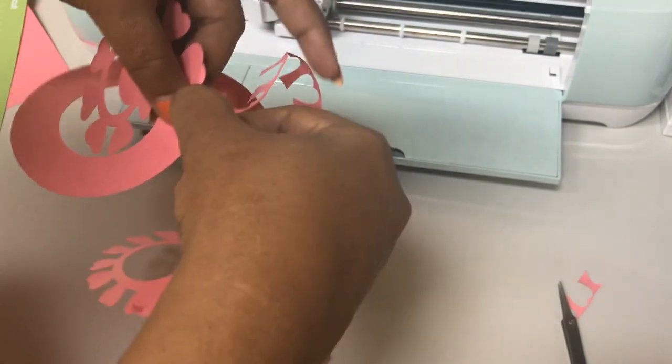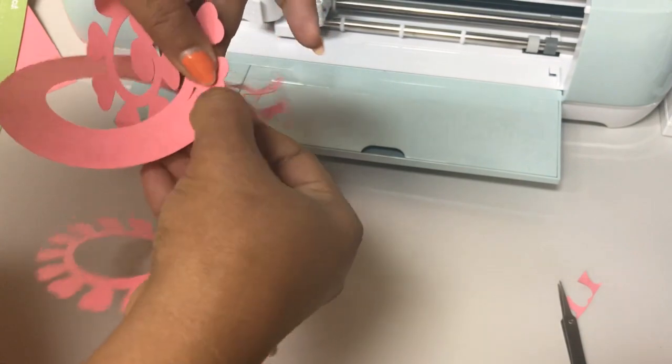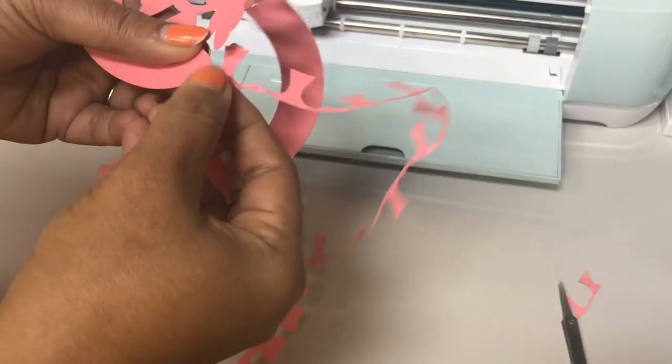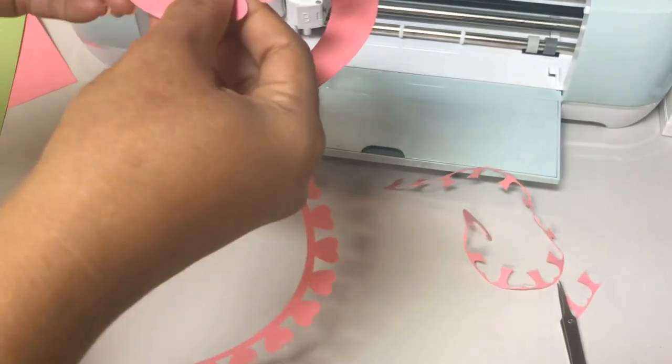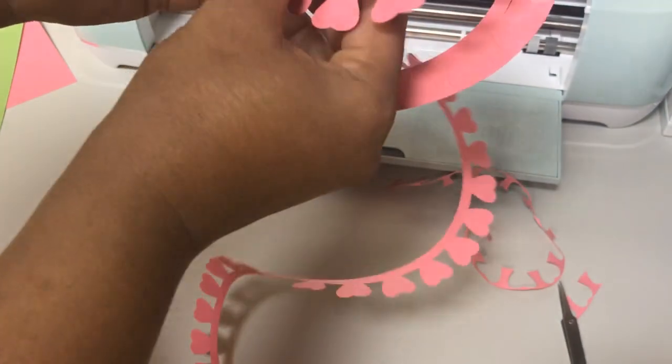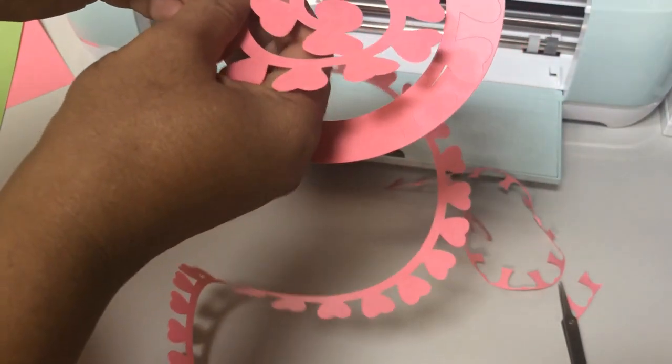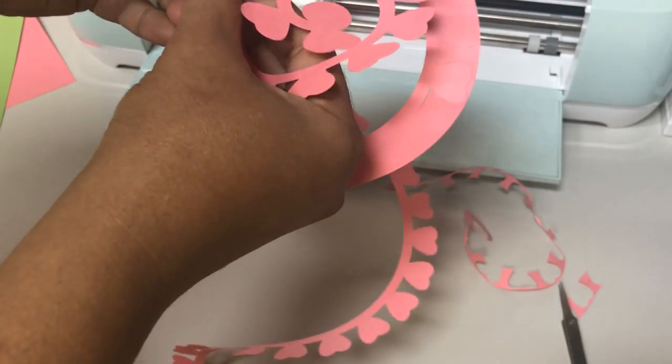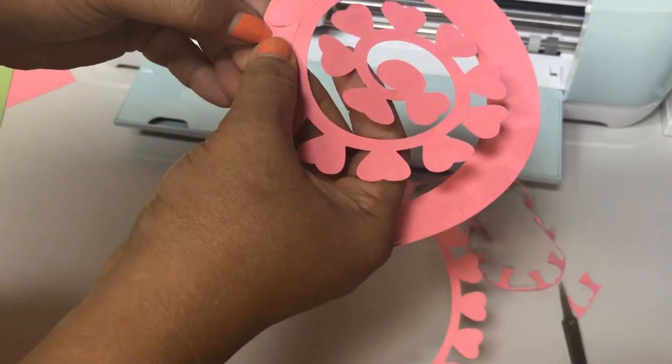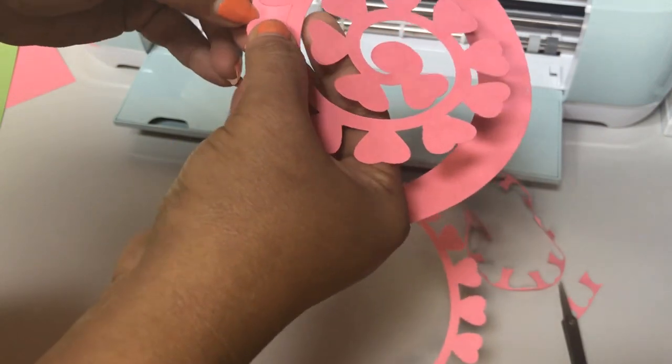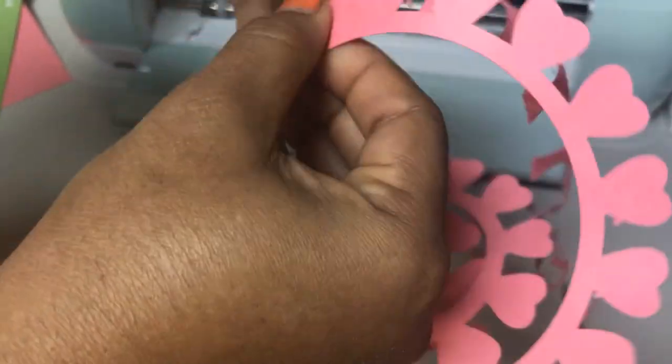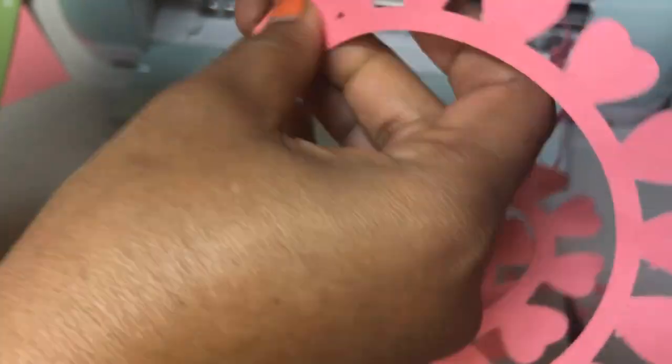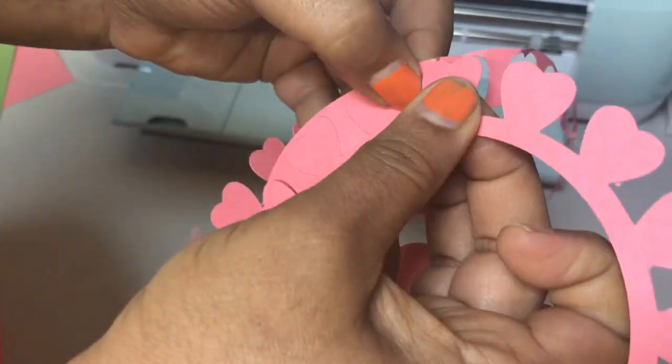So by practice we have to figure out which type of material needs how much pressure to cut. So I use the default setting which says cardstock, so by practice we will learn to adjust the dial. Now we have removed the design out of the mat. Now we will see how to shape this into a 3D flower.